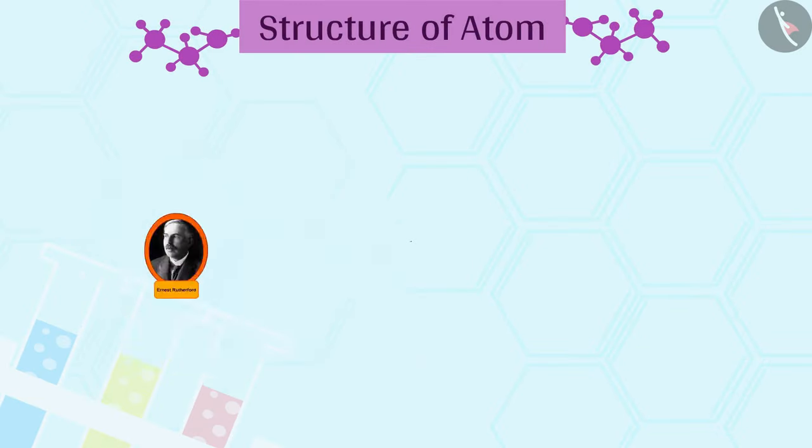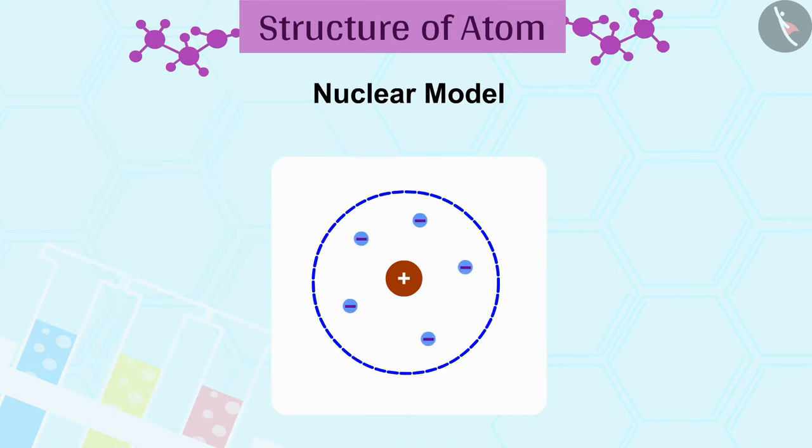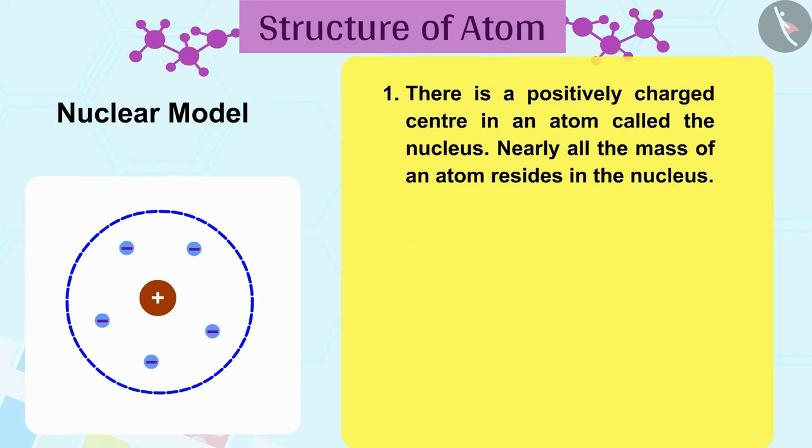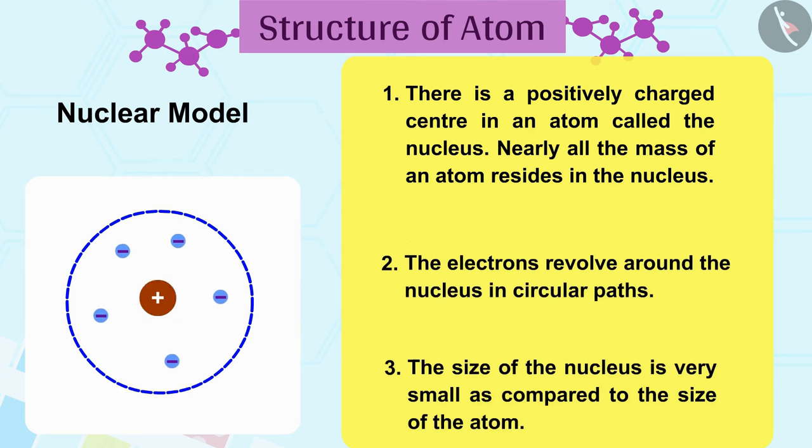Based on his experiments, Rutherford presented the nuclear model of the atom. There is a positively charged center in an atom called the nucleus. Nearly all the mass of an atom resides in the nucleus. The electrons revolve around the nucleus in circular paths. The size of the nucleus is very small as compared to the size of the atom.